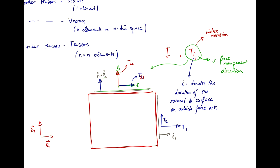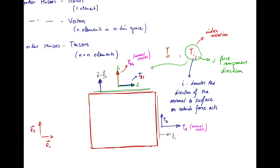Now, the stresses that act along the normal of the surface, T11 and T22, are referred to as normal stresses, whereas the stresses that act along the surface that they're acting on, T21 and T12, are called shear stresses.